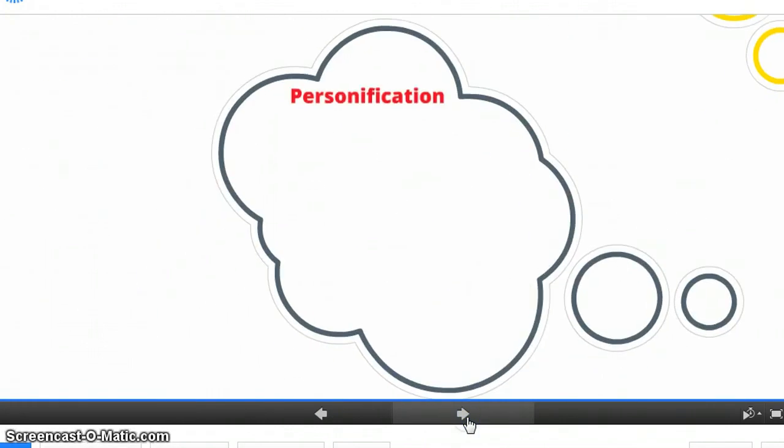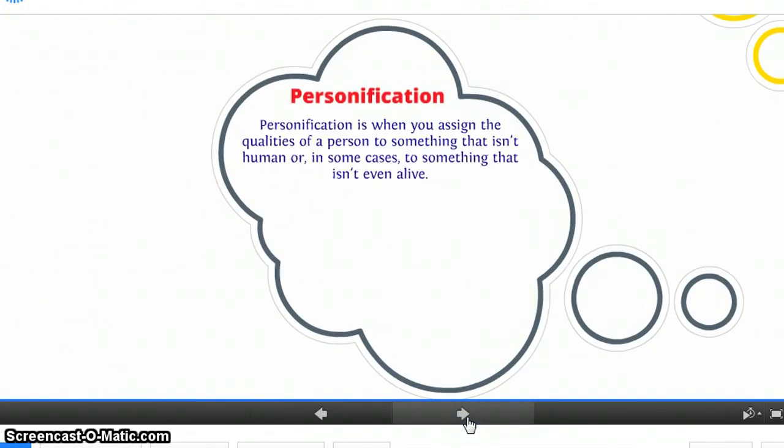All right, and our last one, personification. Personification is assigning qualities of a person to something that isn't human or something that isn't alive. So personification can be making an animal do something that acts like a person or making an object do something that acts like a person. And here we have an example of both.